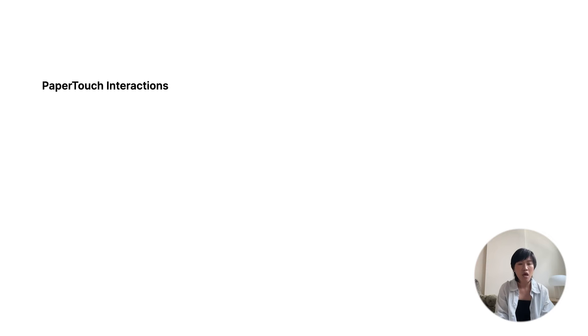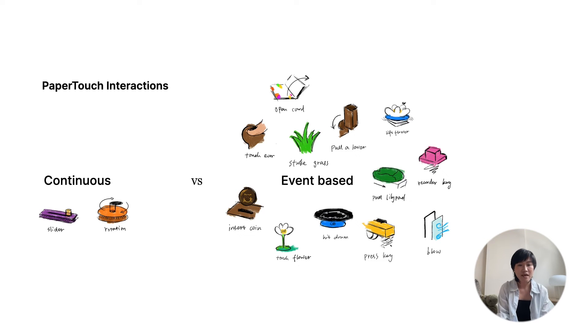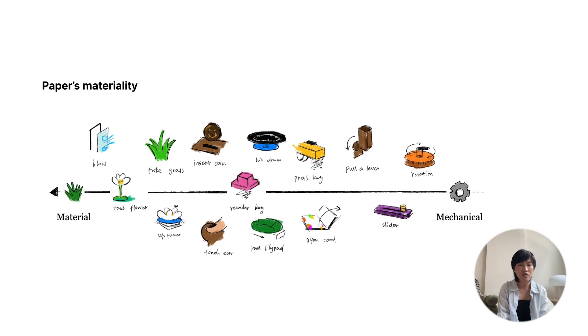We have programmed a web page to respond to these physical interactions. There are more interesting applications and we also provide source files for those who are interested to try them out, so please check our paper for more details. For the last part of this presentation, I want to focus on the design dimensions emerging from our explorations. Paper Touch can support both continuous input and event-based inputs. We made 13 interactive paper mechanisms and reflected on what we built. Surprisingly, most interactions use event-based mechanisms. We find ourselves attracted to using the qualities of different types of paper and crafting techniques to support rich interaction. From gentle touch to forceful interaction, these mechanisms span a spectrum from mechanical to material.